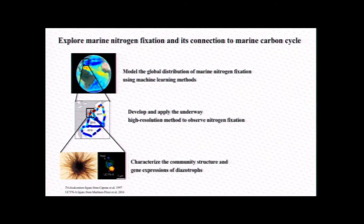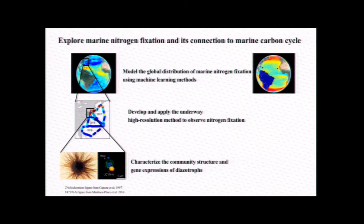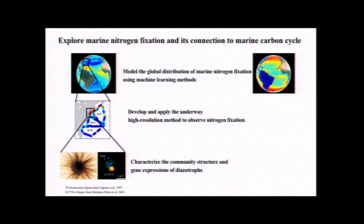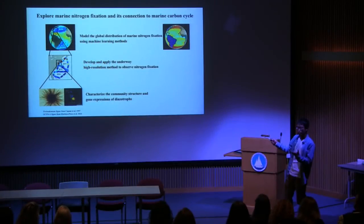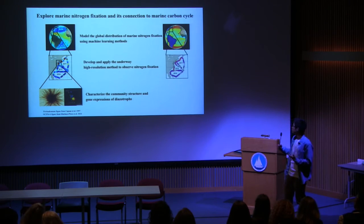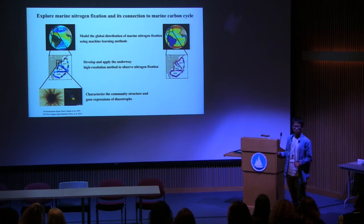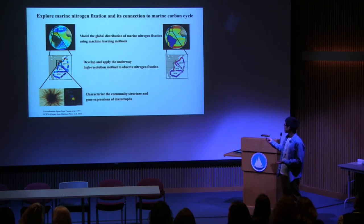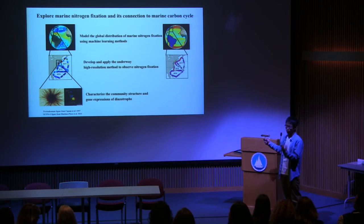Outside of that, we also look at the carbon cycle — specifically carbon export and net community production. We're investigating the contribution of nitrogen fixation to carbon export. At the regional scale, we have continuous net community production measurements derived from O2/Ar ratios, and we can examine the contribution of nitrogen fixation to net community production at a fine scale.